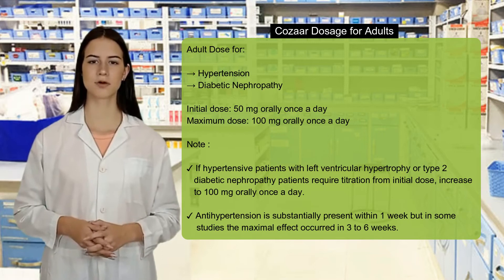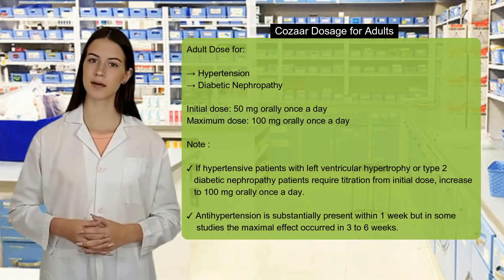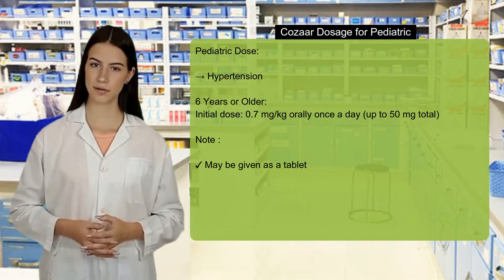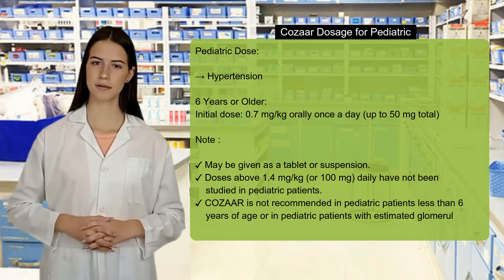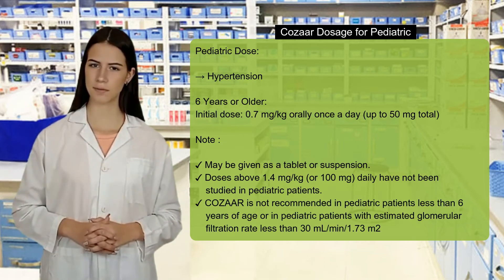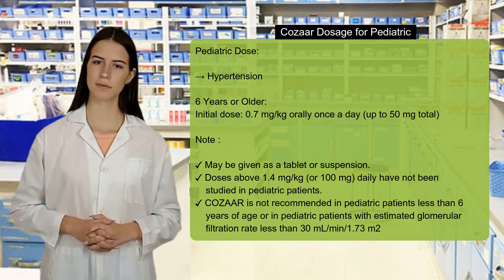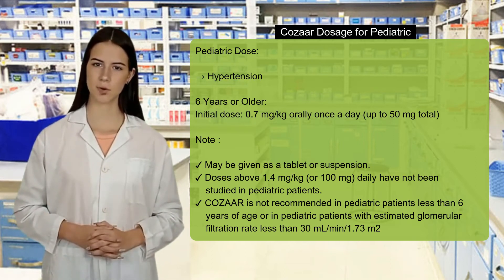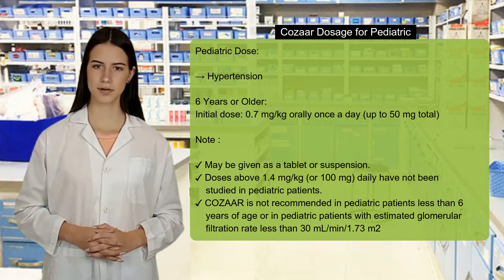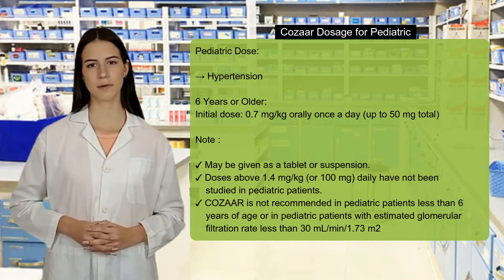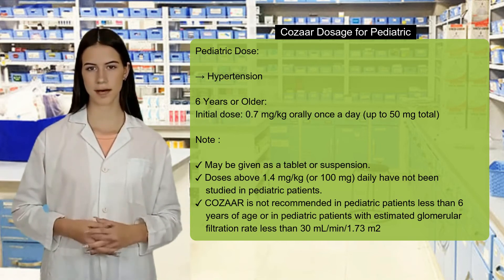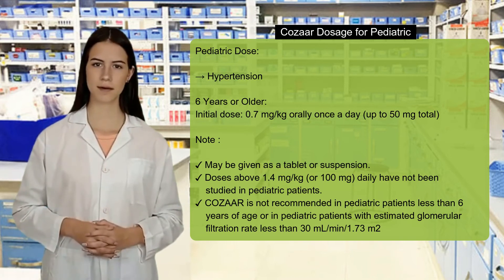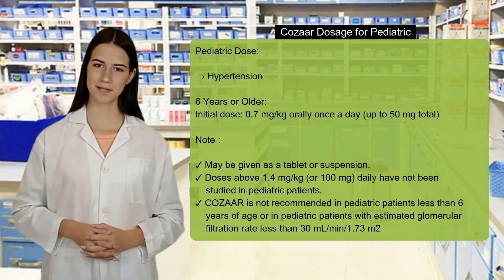The antihypertensive effect is substantially present within one week, but in some studies the maximal effect occurred in 3 to 6 weeks. Pediatric dose for hypertension, six years or older: initial dose, 0.7 mg per kg orally once a day, up to 50 mg total, may be given as a tablet or suspension. Doses above 1.4 mg per kg or 100 mg daily have not been studied in pediatric patients. Cazara is not recommended in pediatric patients less than 6 years of age or in pediatric patients with estimated glomerular filtration rate less than 30 ml/min/1.73 m².